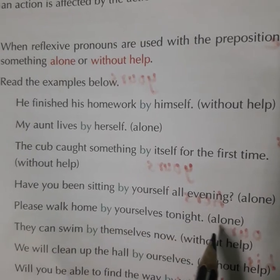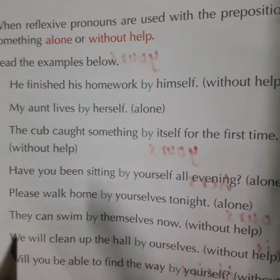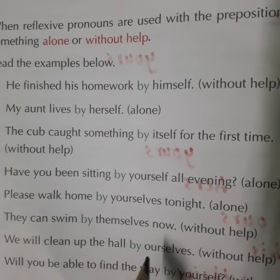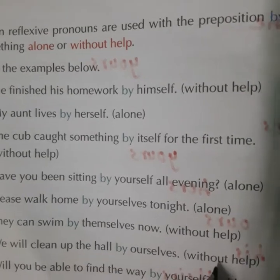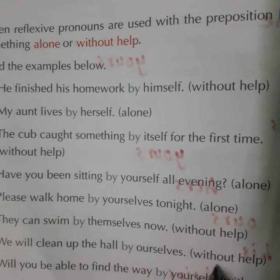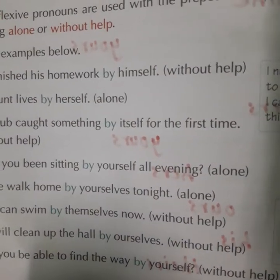Please walk home by yourself tonight — alone, मतलब खुद बाखुद, अकेले चले जाएं। They can swim by themselves now, without help — वो खुद बाखुद swimming कर सकते हैं। We will clean up the hall by ourselves — हम hall को खुद साफ कर सकते हैं, means they don't need any help. Will you be able to find the way by yourself, without the help of any other?